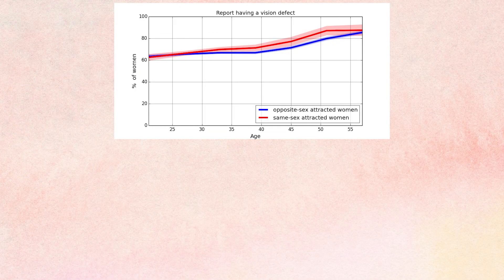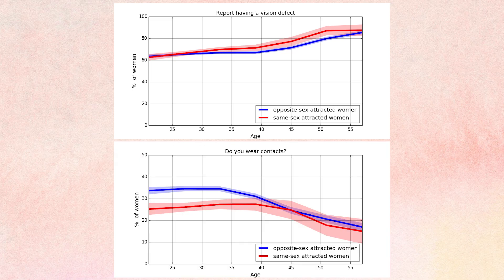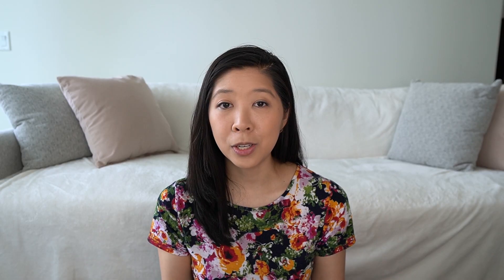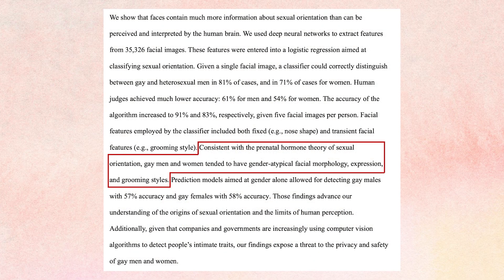They did a similar analysis with women. Women reported similar rates of having vision defects, but more straight women — particularly under the age of 40 — wear contacts, meaning whether a woman chooses to wear contacts or glasses simply has to do with her aesthetic preference. In the original paper, the researchers tried to explain appearance differences by talking about hormone exposure as a fetus — claiming, for instance, that gay men are less likely to grow beards due to underexposure to male hormones in the womb, giving them a more feminine look. However, Blaise's survey and analysis shows it's more about stylistic trends and cultural norms.